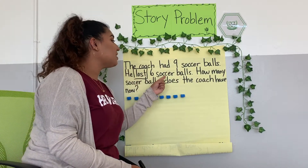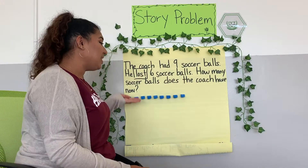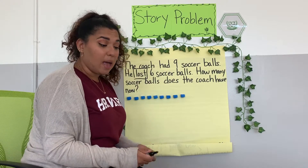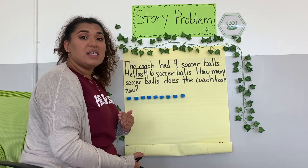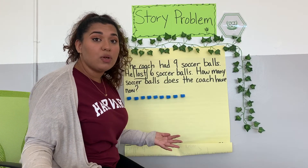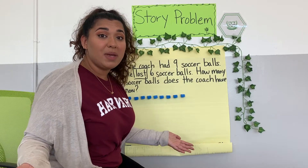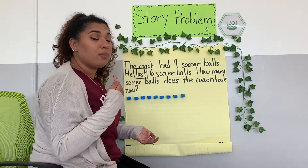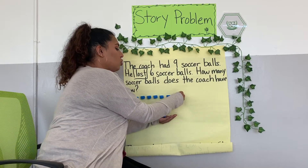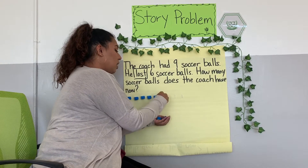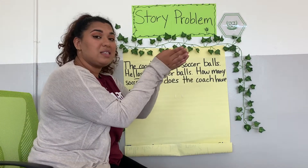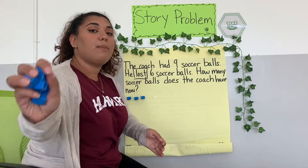So it says he lost six soccer balls. That means from these nine soccer balls, six of them are gone because he lost them. So what we need to do is take off six cubes to show the six soccer balls that are lost. Are you ready to count with me? Great. Let's count loud and proud — six soccer balls that are lost. Ready? One, two, three, four, five, six. So the coach lost these six soccer balls. I'm going to go ahead and put them away.